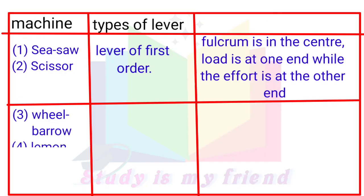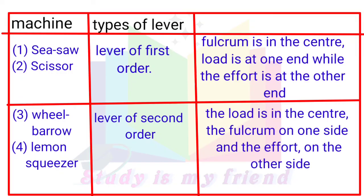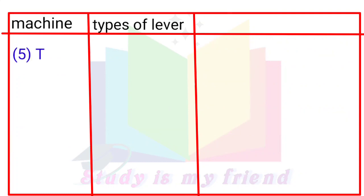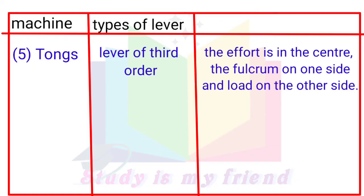Machine 3: Wheelbarrow. Machine 4: Lemon squeezer. Type of lever: lever of second order. The load is in the center, the fulcrum on one side and the effort on the other side. Machine 5: Tongs. Type of lever: lever of third order. Effort is in the center, the fulcrum on one side and load on the other side.